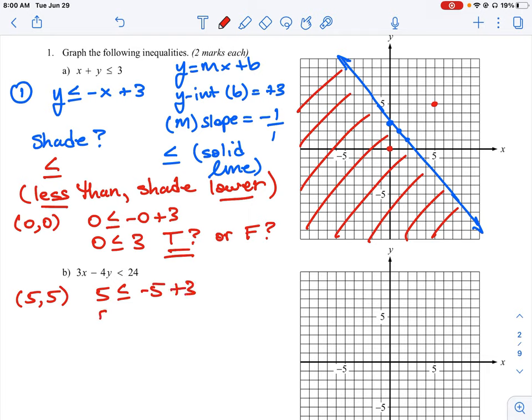So that means y is five less than negative five plus three. That's what x is. So I'm going to have five is less than negative two. Negative five plus three is negative two. So is that a true statement or is that a false statement?